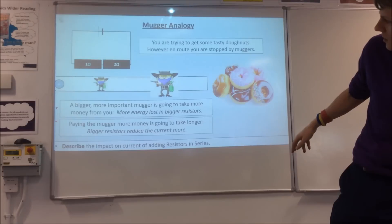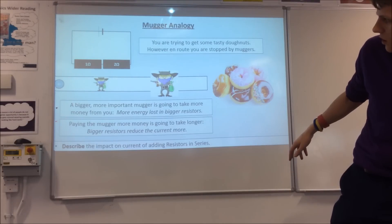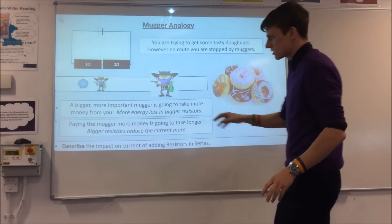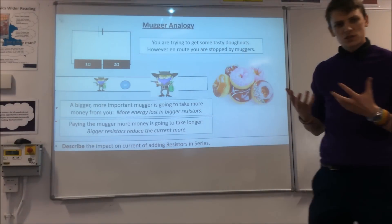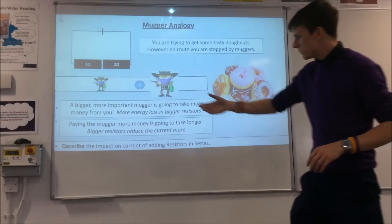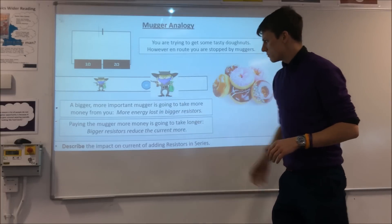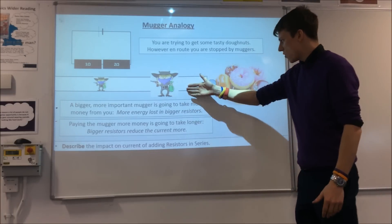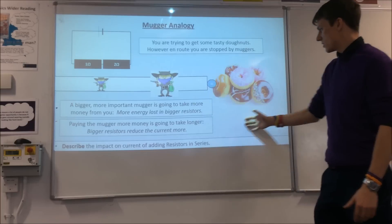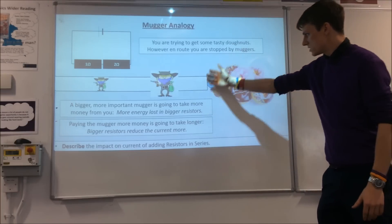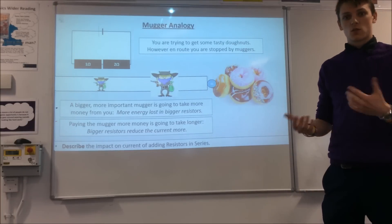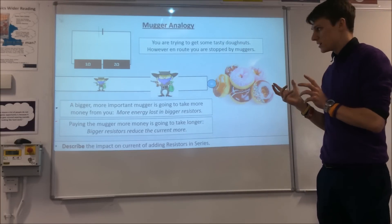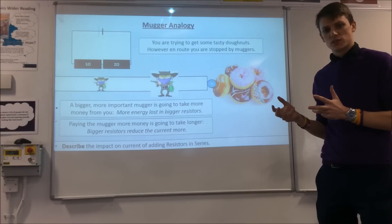So in terms of this, your charge comes along heading to the donuts, meets the small mugger and loses some energy, then meets the bigger mugger and loses more energy, and it's got no energy left — so it needs to eat all those delicious donuts again to get some energy to go. That's the idea with series resistors.